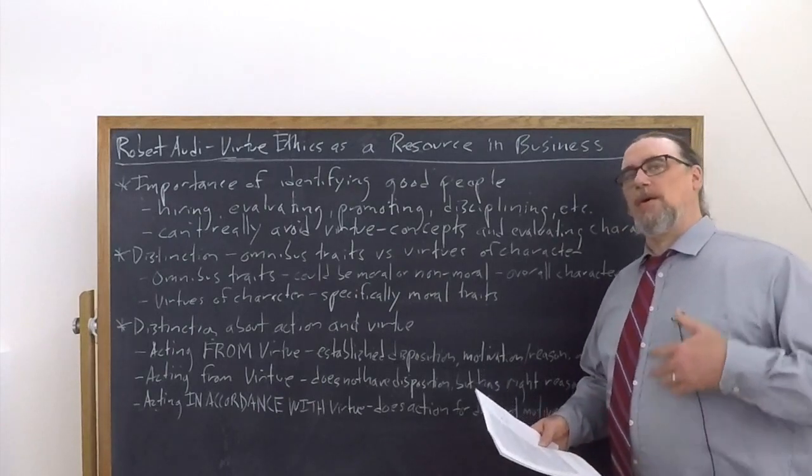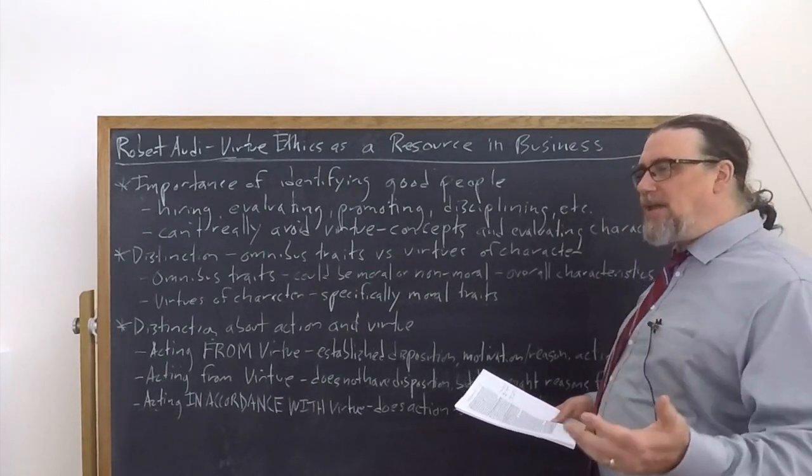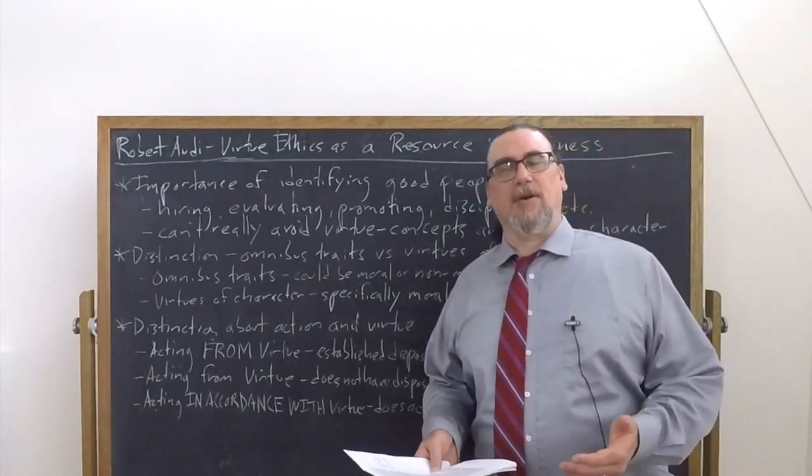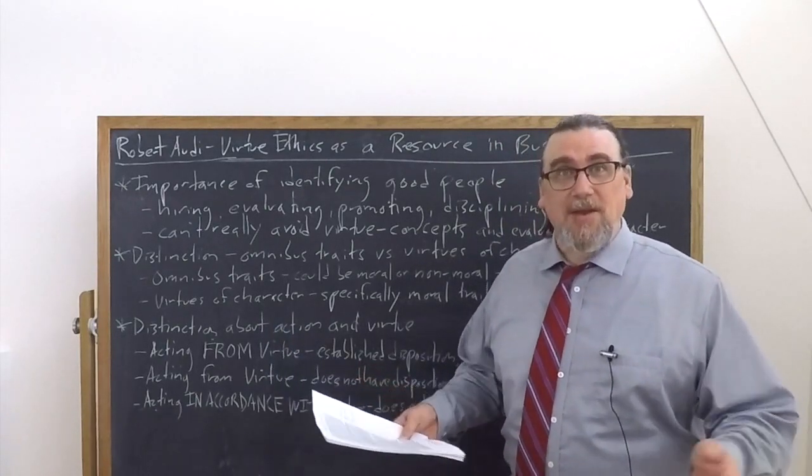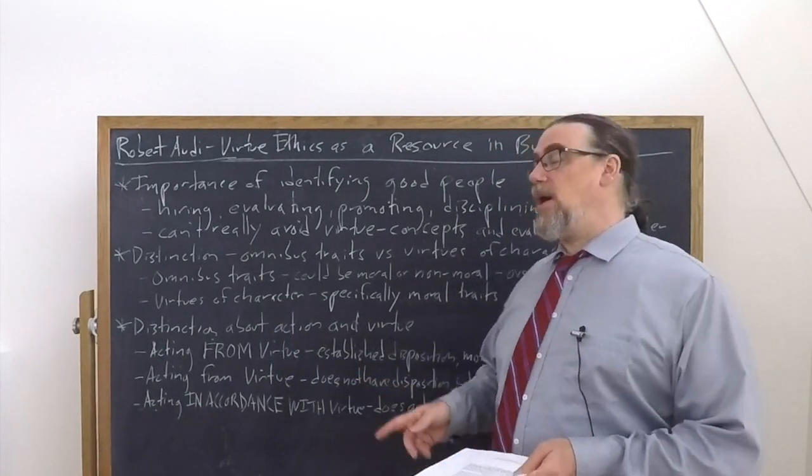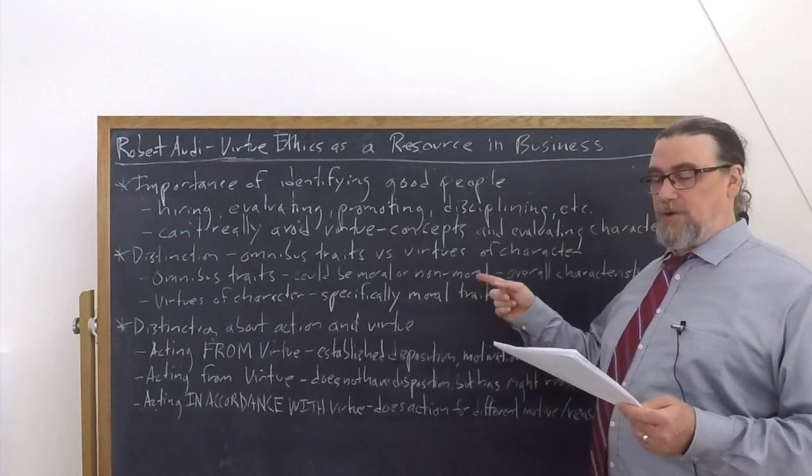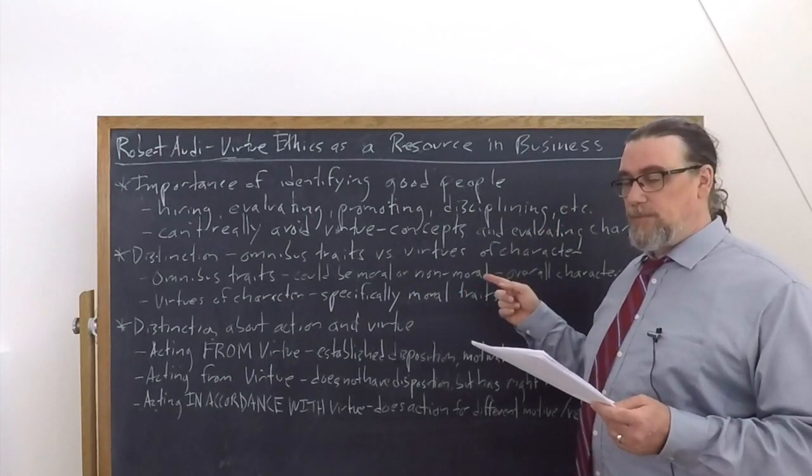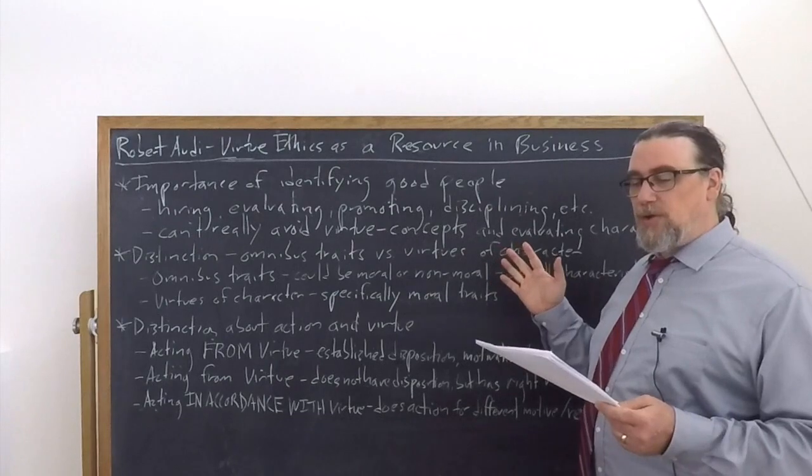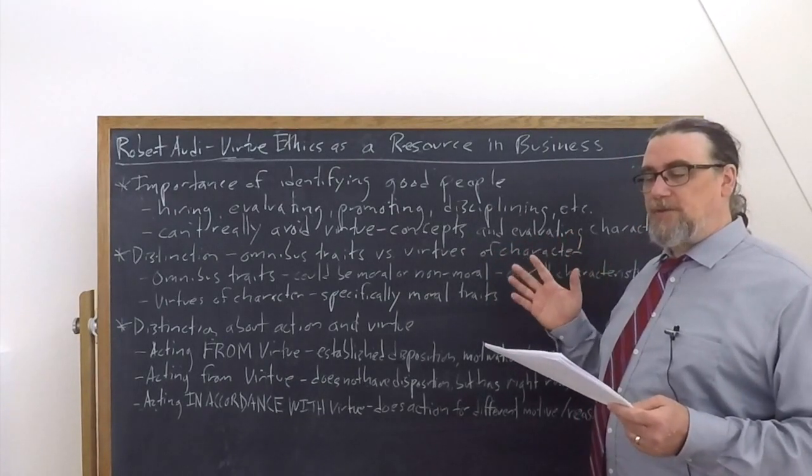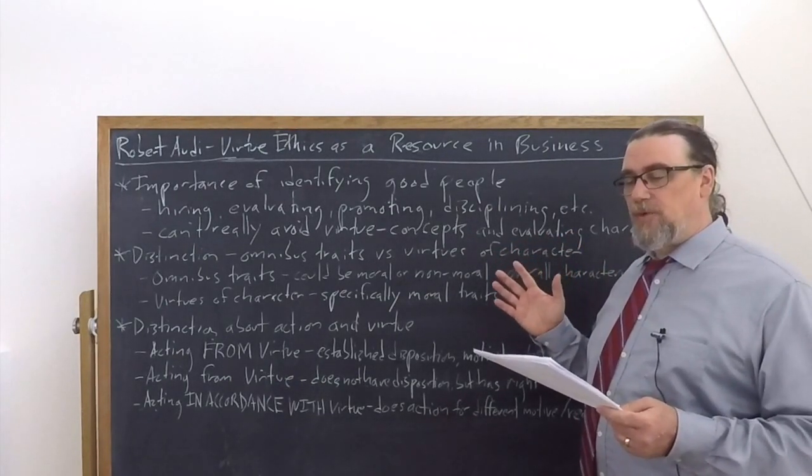The people who set up the Ponzi schemes and defrauded investors, that's turpitude, that's wickedness. And we can also go on to talk about particular virtues of character. So he says that a person of rectitude is morally good, but it doesn't specify any particular moral trait.